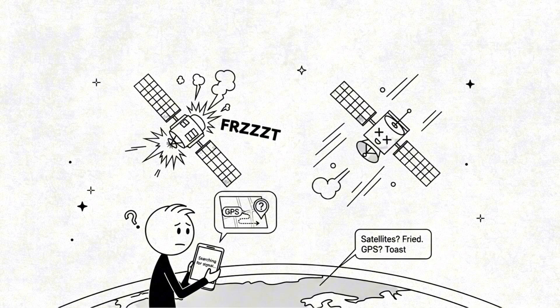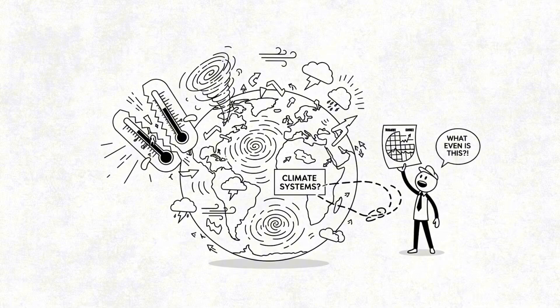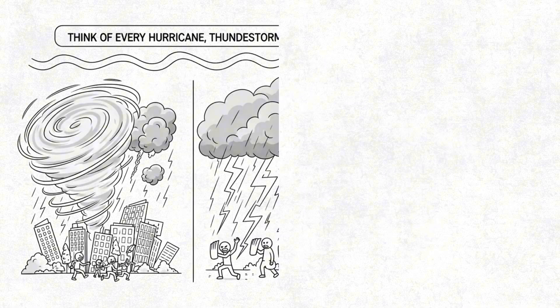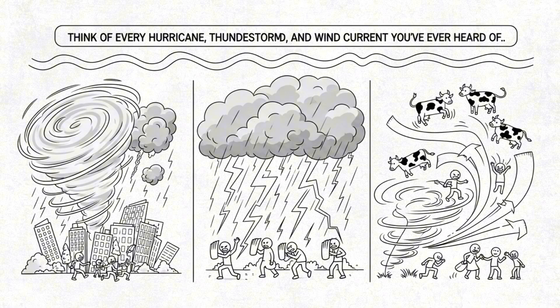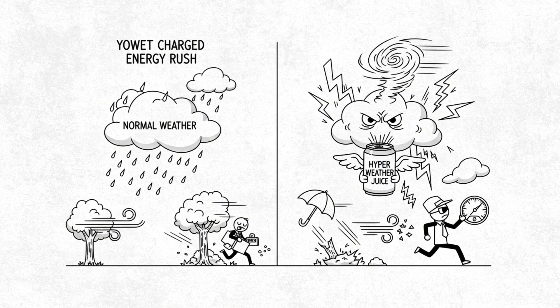Satellites? Fried. GPS? Toast. Climate systems? Think of every hurricane, thunderstorm, and wind current you've ever heard of, and then imagine them with a Red Bull problem.